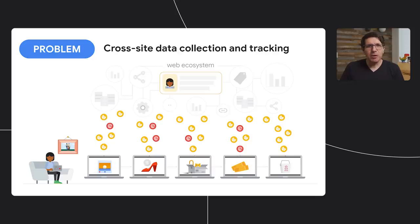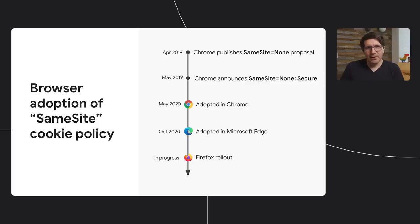This also created a security problem because the wide default visibility of cookies exposed users to cross-site request forgery attacks based on third parties observing the information in these cookies. Now developers are required to opt in to use cookies across sites as so-called third-party cookies, and in turn browsers can disable such cookies in a very straightforward manner. This privacy-preserving default behavior is now enforced in Chrome, Edge, and very soon Firefox.